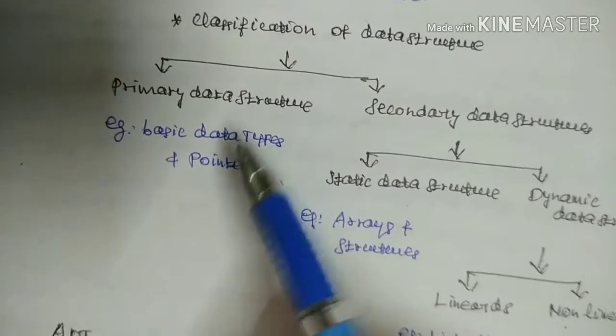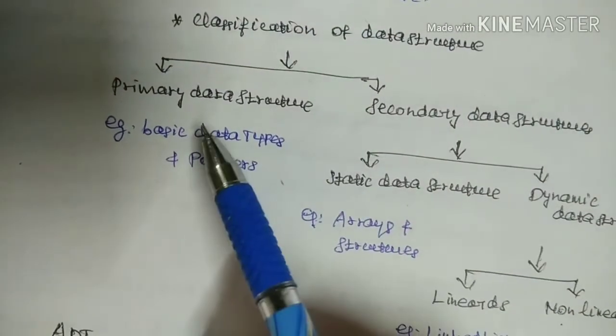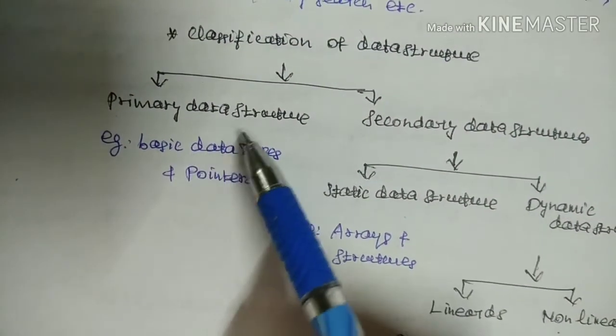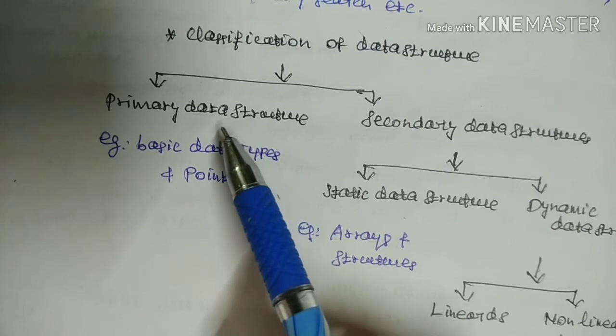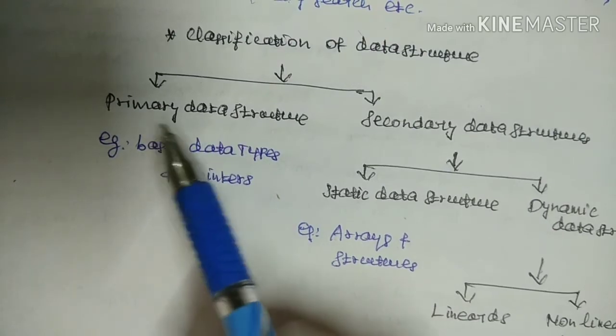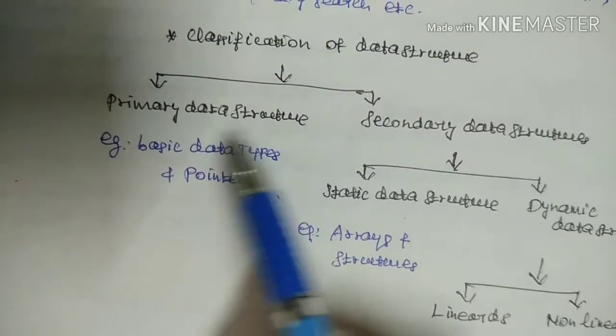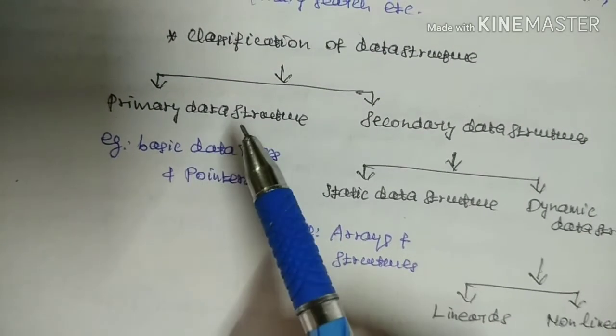Next, Primary Data Structure is directly operated on Machine Instruction. It operates at the level of Machine Instructions.